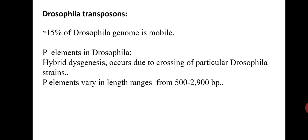The P element encodes for the protein P transposase. Unlike laboratory strain females, wild type females are thought to also express an inhibitor of the P transposase function from the very same element. This inhibitor reduces the disruption to the genome caused by the P elements, allowing fertile progeny. Evidence of this comes from crosses of laboratory females, which lack the P transposase inhibitor, with wild type males which have P elements.